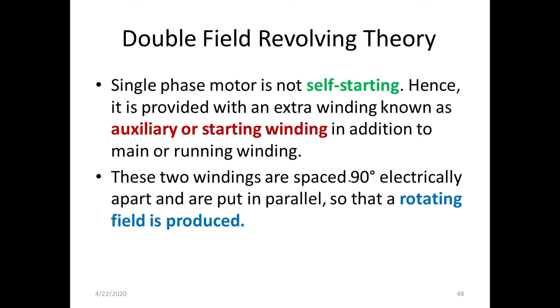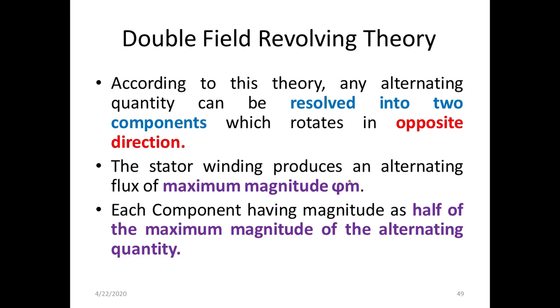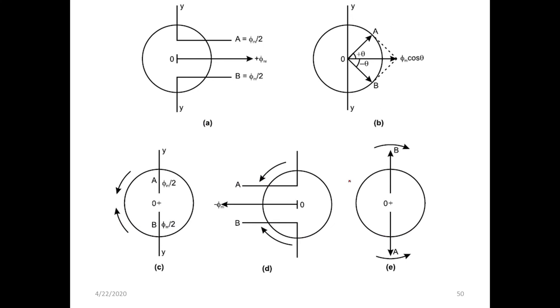As I already told you, it is not self-starting, so we need an extra winding to start. That extra winding is called an auxiliary or starting winding. We already have a main winding. These two windings are placed 90 degrees electrically apart from each other and put in parallel so that a rotating field is produced. This is the one line concept behind double field revolving theory.